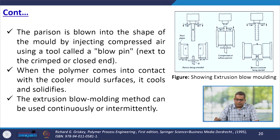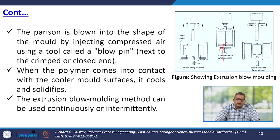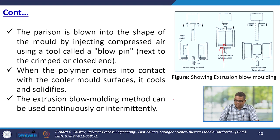The parison — a hollow tube of molten or thermally softened polymer — is extruded. After leaving the die, a split cavity mould closes around the parison and crimps one end. The parison is blown into the shape of the mould by injecting compressed air using a tool called the blow pin. When the polymer contacts the cooler mould surface, it cools and solidifies.